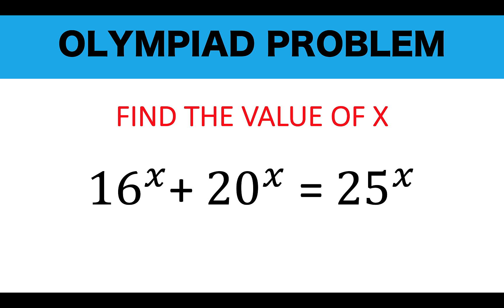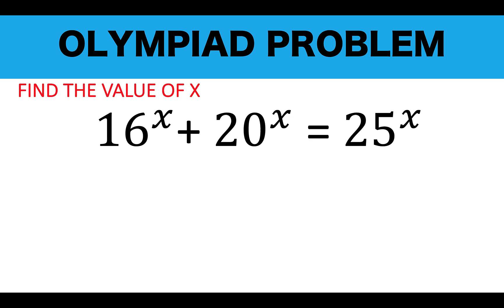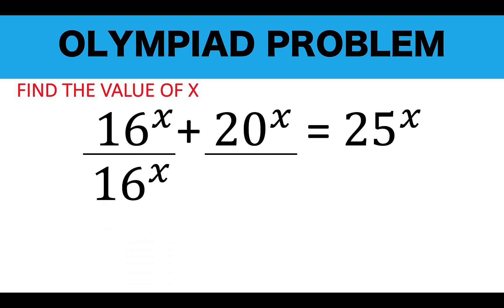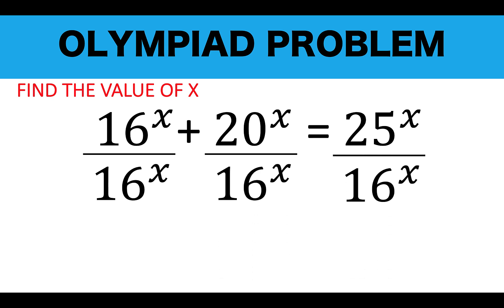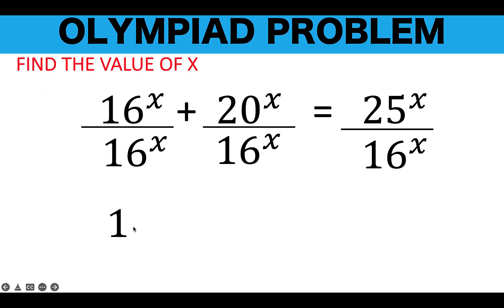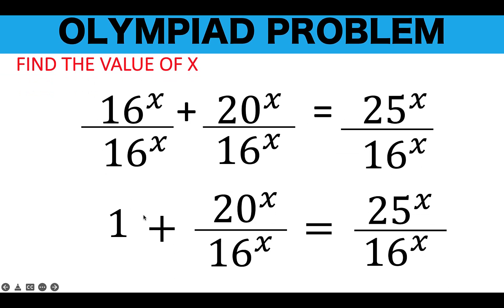Now let's solve this problem together. The first thing that we're going to do is divide the first term by itself, and we'll divide the rest of the terms by the same value, 16 raised to x. Any number divided by itself is 1, so the first term is 1, and we just copy all the rest.